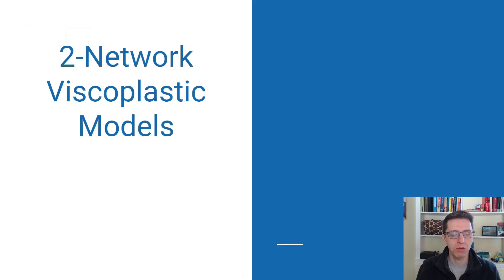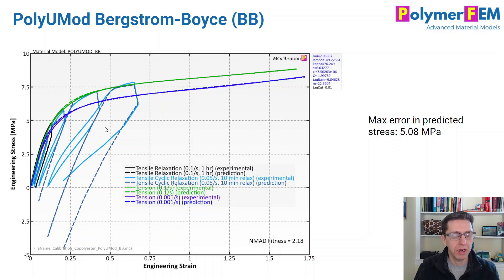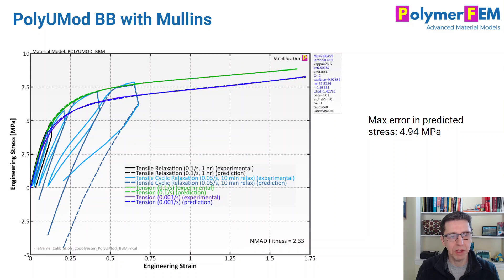To do better, you have to switch to non-linear viscoplasticity. Starting with two-network models: the most commonly used is the Bergstrom-Boyce model. The average error is 2.18% — usually that feels pretty good — but the maximum error, particularly during unloading and for residual strain prediction after unloading, is not good at all: 5 MPa. Activating Mullins damage with the same BB model doesn't help significantly. The errors are almost the same with or without the Mullins effect in this case.